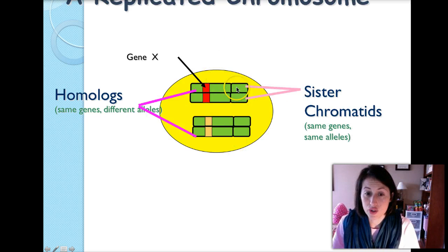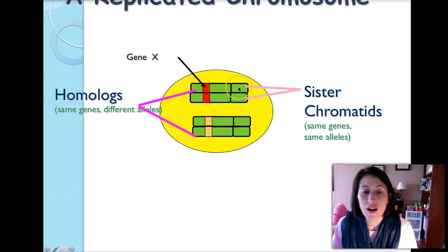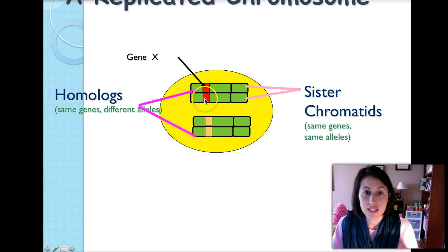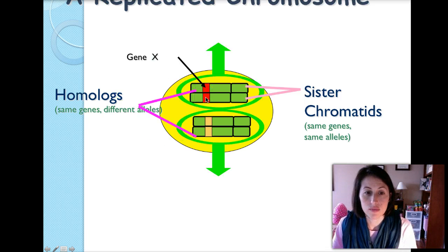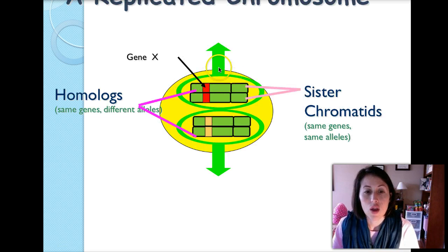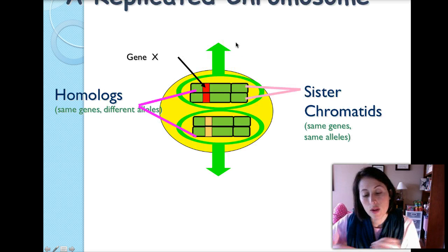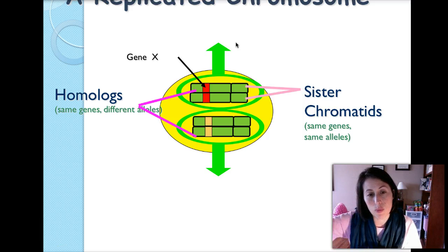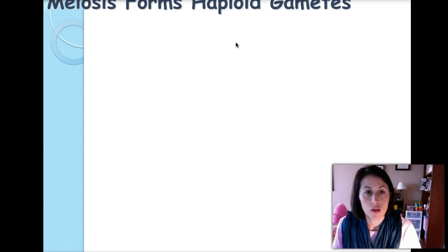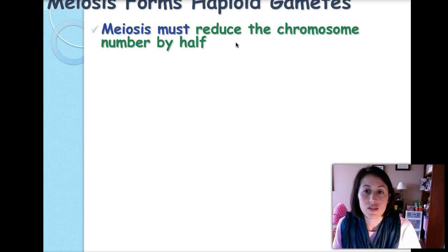Sister chromatids are identical to each other — they have the same genes and the same alleles, the same genetic information. When the cell divides during meiosis, these will pull apart. The purpose of meiosis is to form haploid gametes; meiosis reduces the chromosome number by half, and fertilization then restores the diploid number.